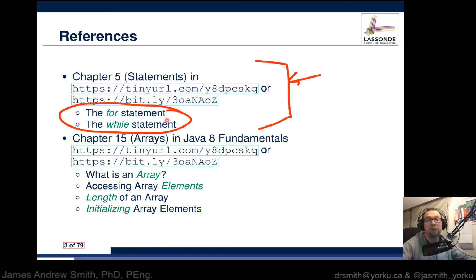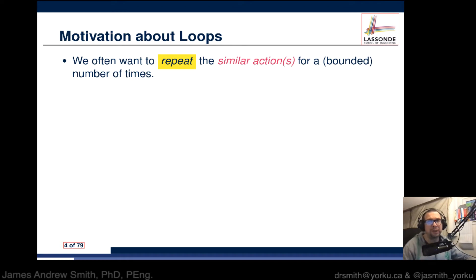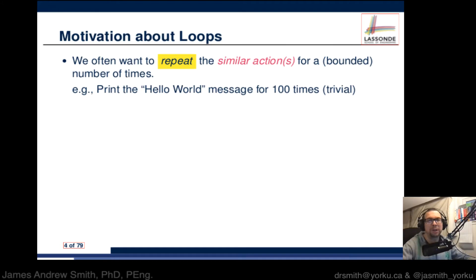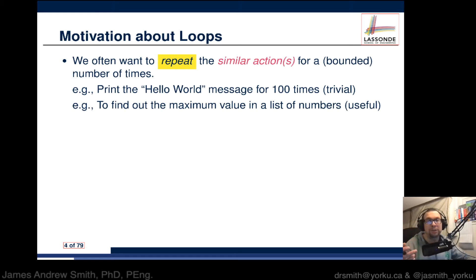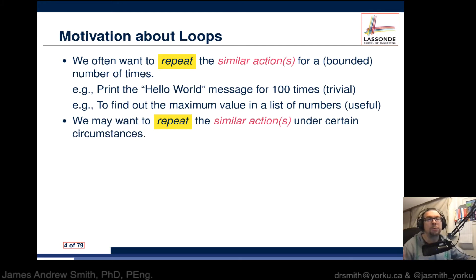The motivation behind loops: we often in engineering applications want to repeat similar actions a bounded number of times — a fixed number of times. For instance, we might want to print the word 'Hello World' a hundred times, or like Bart in The Simpsons writing the same thing over and over on the blackboard. You might also want to find the maximum value in a list of numbers, which requires traversing through that list repeatedly.